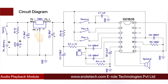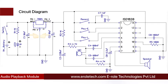The 7805 voltage regulator is used to convert 9-volt DC into fixed 5-volt DC. While we use the circuit, the battery starts discharging and battery voltage starts decreasing, but the 7805 maintains a fixed 5-volt DC at its output unless the battery voltage goes below 7 volts. Two capacitors of 10 microfarad each are used at the input and output of the 7805 to avoid any fluctuation in the power supply.